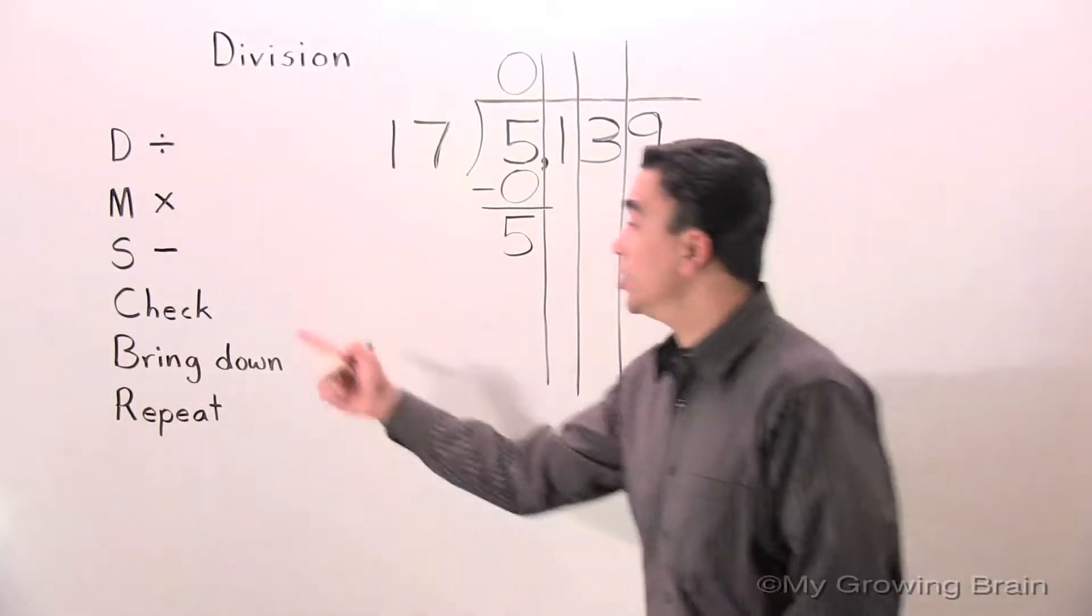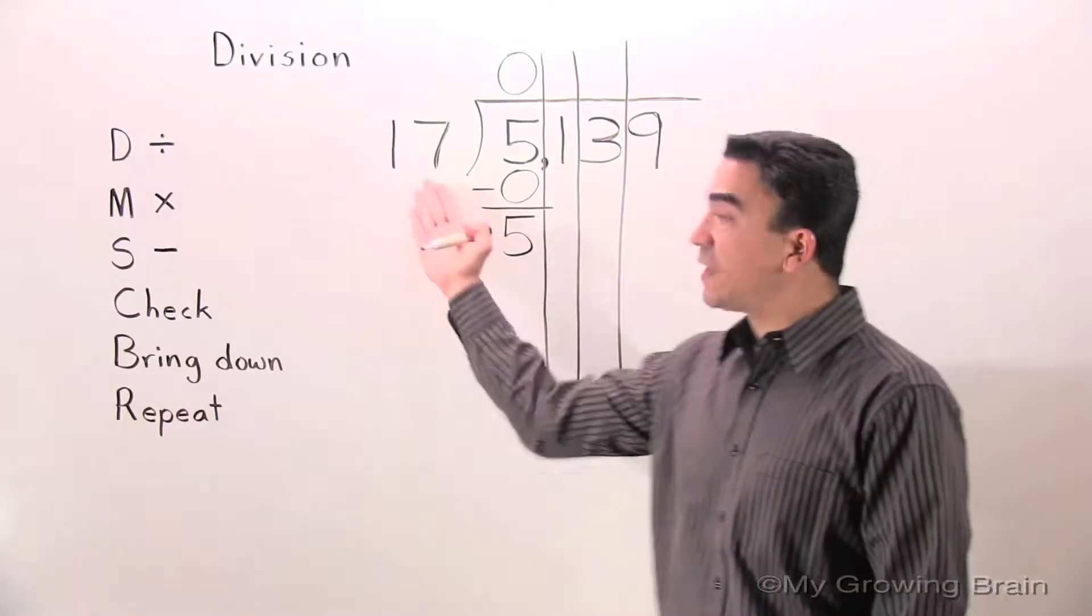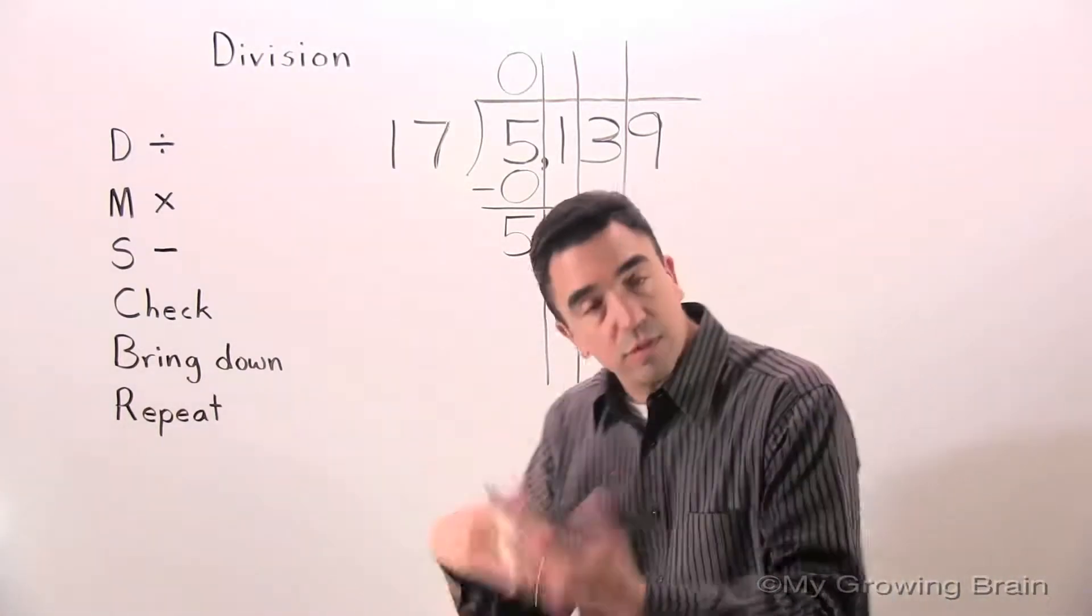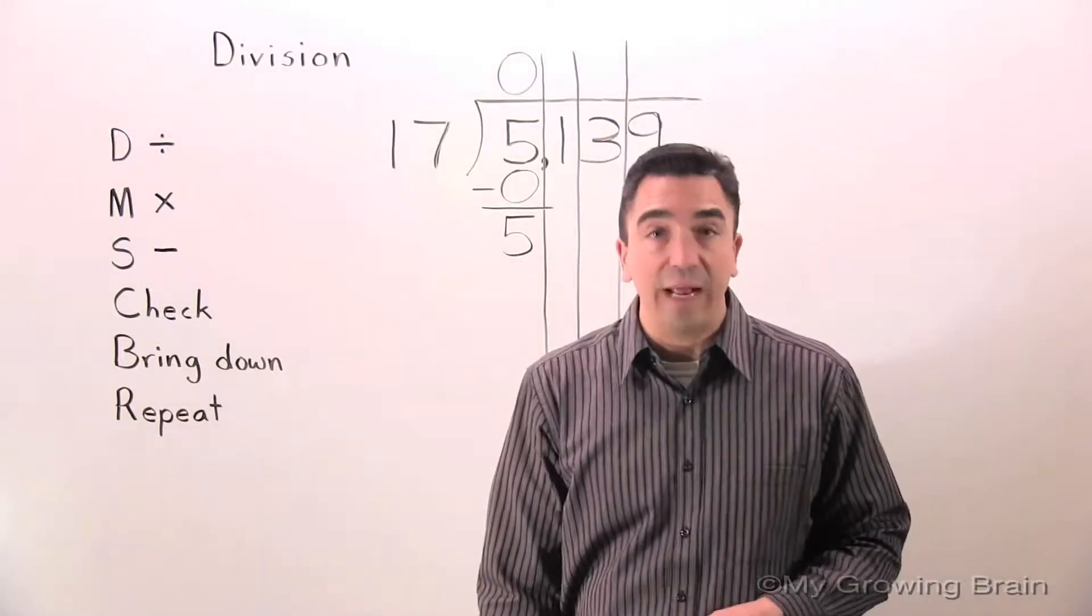Next step, check. 5 is less than 17. Let's keep on going. Bring down.